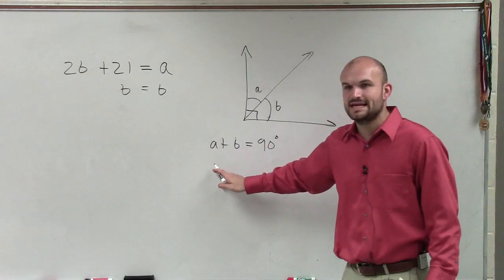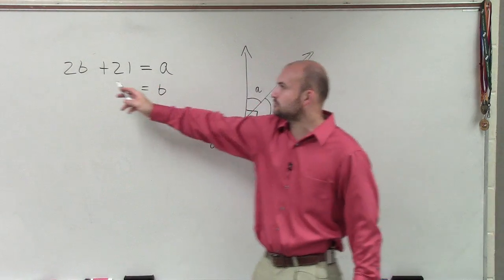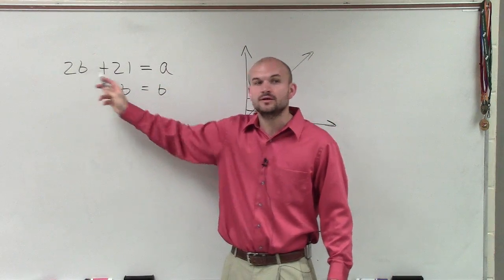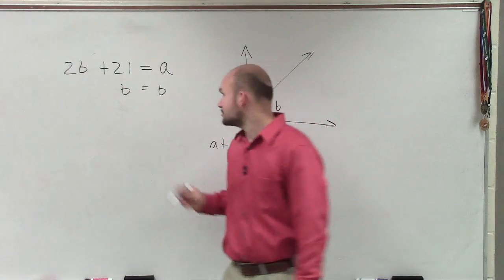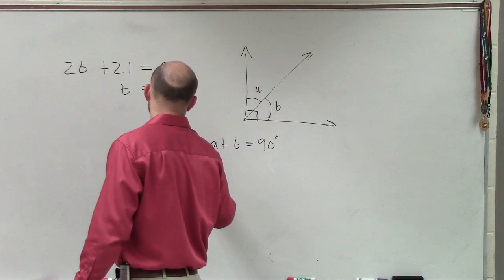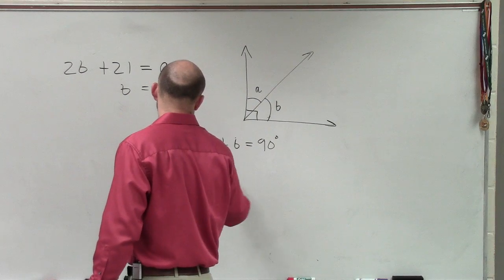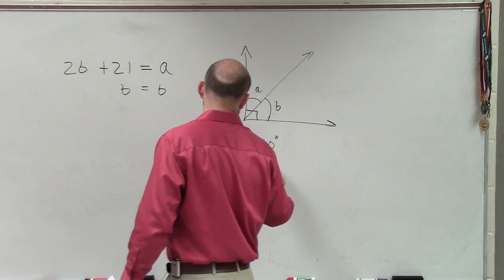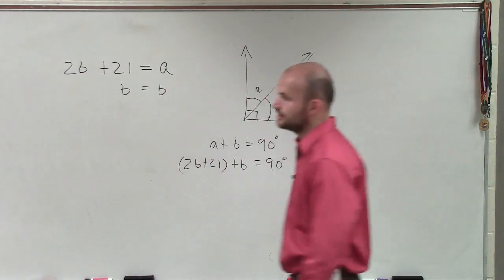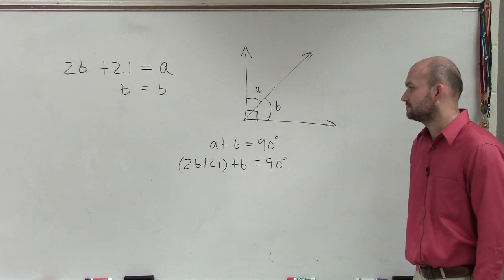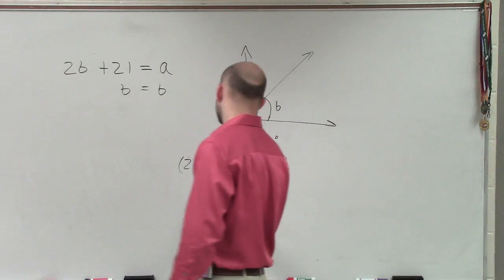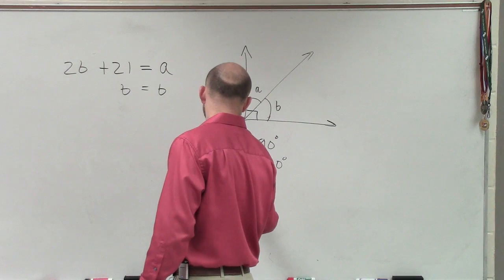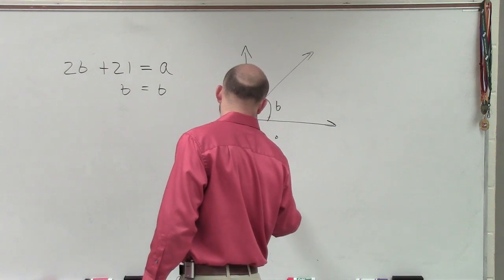Well, what is angle A equal to? Angle A is equal to twice the angle B plus 21. So now you can write this as 2B plus 21 plus B equals 90 degrees. So therefore, we have 3B plus 21 equals 90.